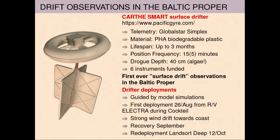The deployments were guided by simulations. The first deployment happened just over a month ago, in August, from the vessel Electra during the Cocktail expedition. There were very strong winds — we got about nine Beaufort by the end of the day, which shook the cocktail a little bit. As a result, the drifters sampled a very strong wind drift, and after about a week they stranded along the coast. We recovered them and they will be deployed next week in the Landsort Deep. We are focusing on the Western Gotland Basin and coastal processes. Here are some snapshots from the deployment and from the recovery with colleagues from MESO. The GlobalStar GPS tracking was very accurate and it was easy to find them along the Swedish coast.